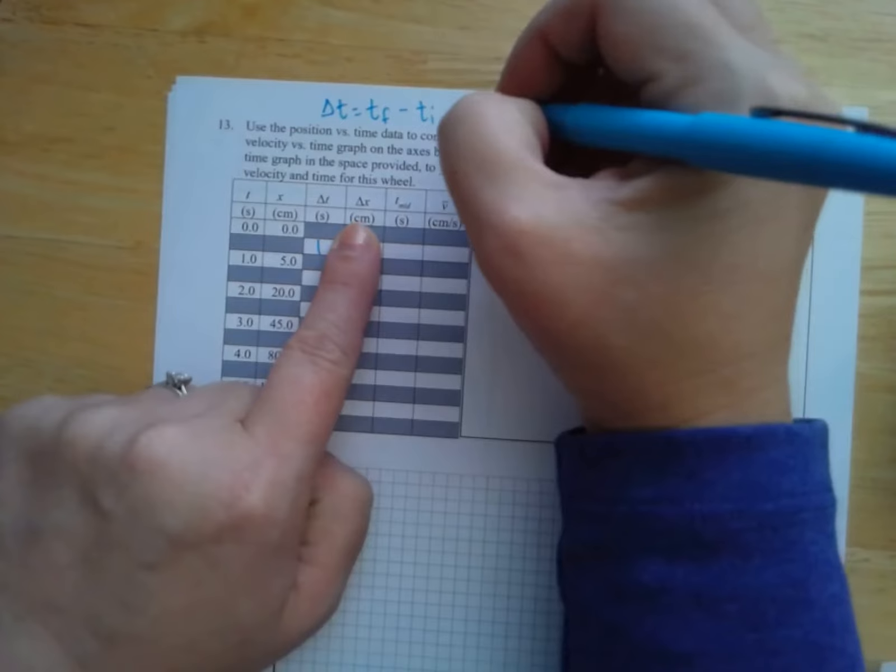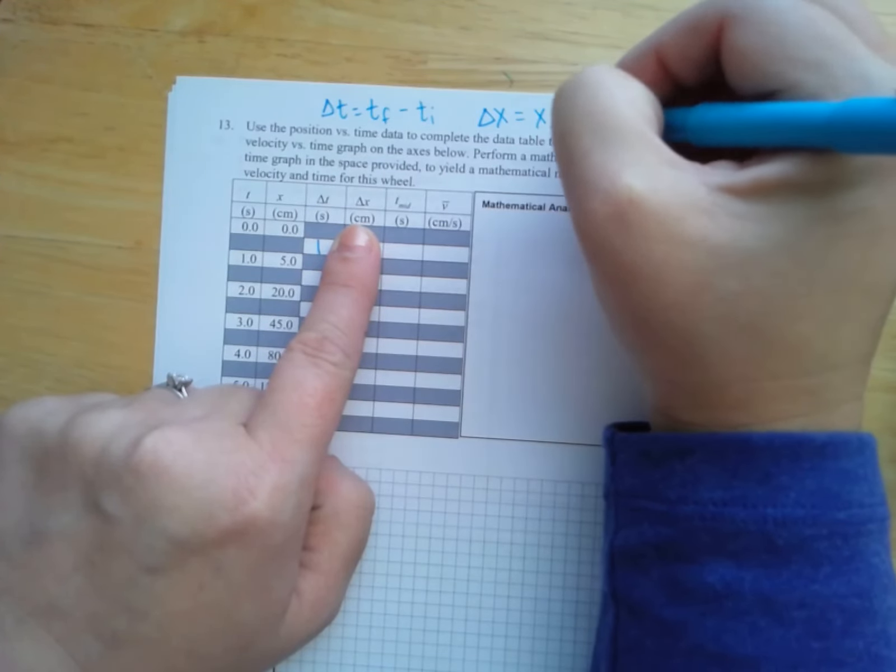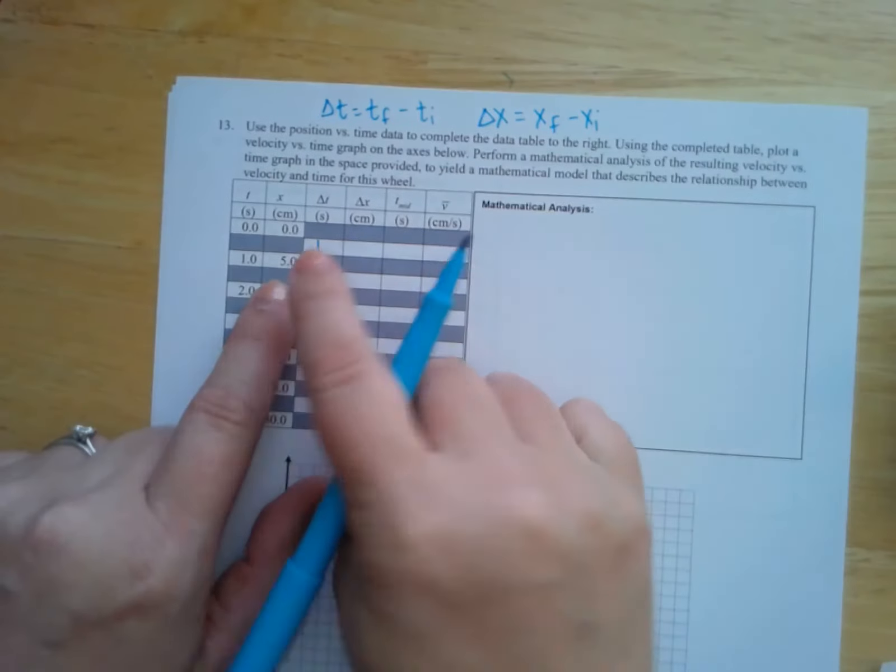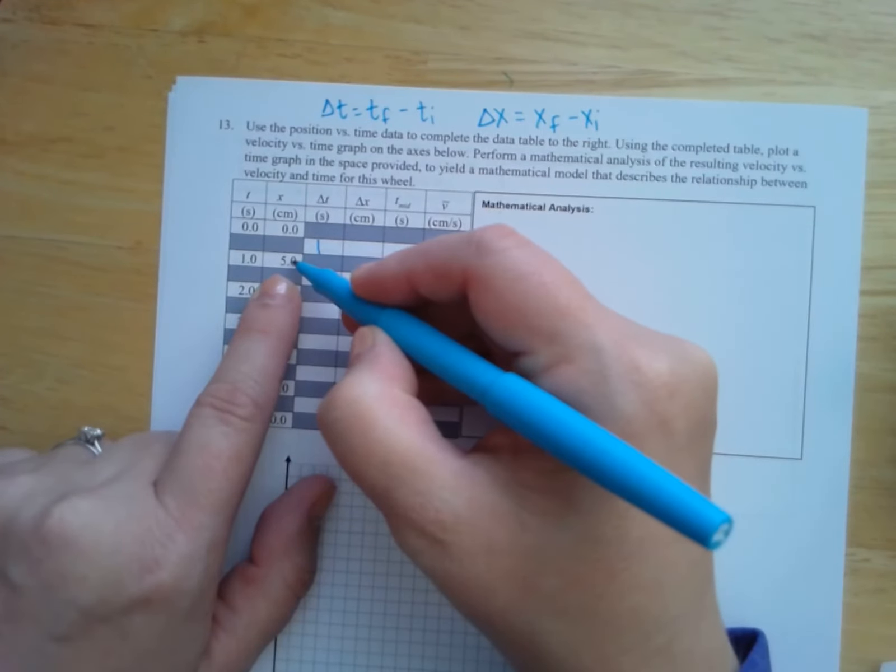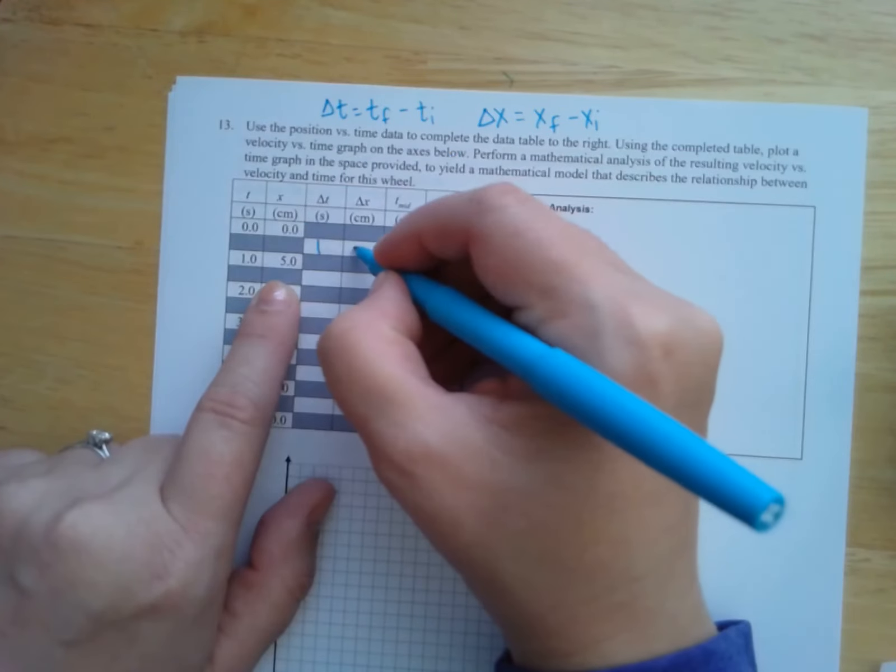The next column delta X, my change in position is going to be my final position minus my initial position. And so I'm going to look at my final position and my initial position for this pair of data. And I'm going to say that's five centimeters.